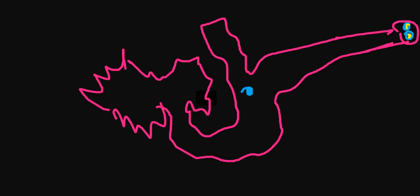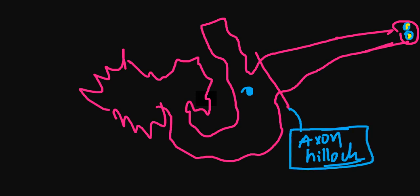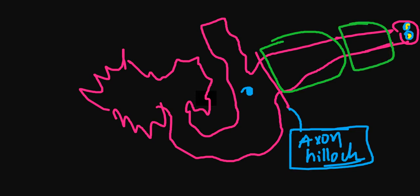A neuron looks like this — with terminal buttons containing neurotransmitters such as glutamate, serotonin, and melatonin. It has a nucleus and an axon hillock where the action potential starts. Then there is a myelin sheath along which the action potential propagates rapidly, transmitting the message very fast.